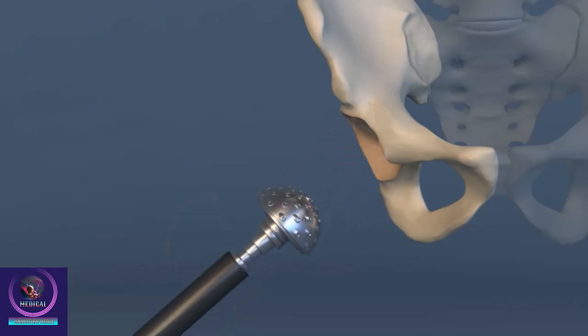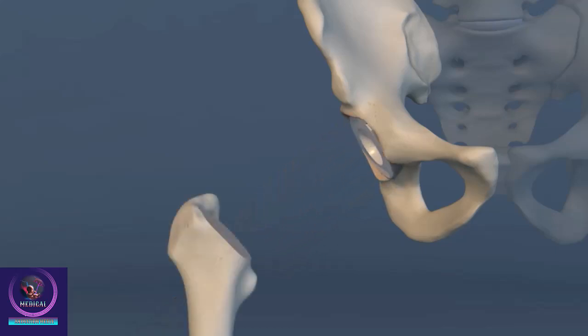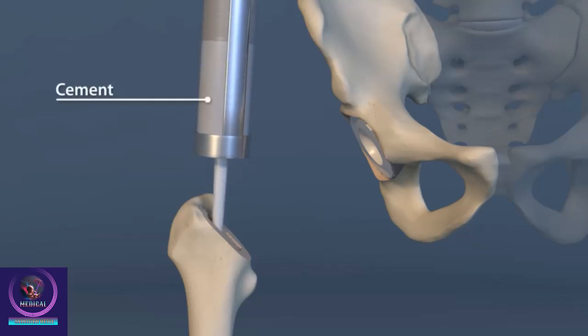A metal socket is placed into the cavity. Bone cement or screws may secure it in place. The surgeon presses a liner into the socket. The liner creates a smooth surface that will allow the joint to move freely.